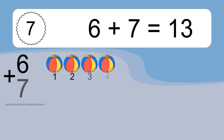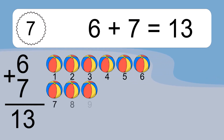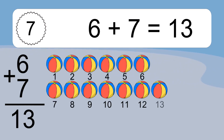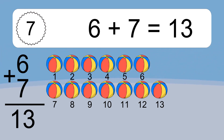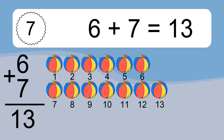6 plus 7 equals what? 6 plus 7 equals 13. Let's count it. 1, 2, 3, 4, 5, 6, 7, 8, 9, 10, 11, 12, 13.